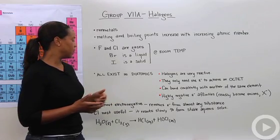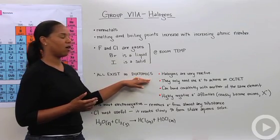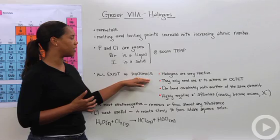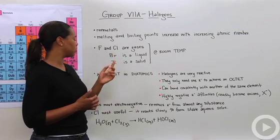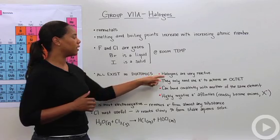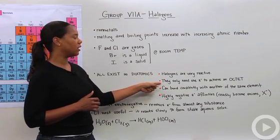That means you've got F2, Cl2, Br2, and I2, and that's because halogens are very reactive. They only need one electron to achieve an octet.